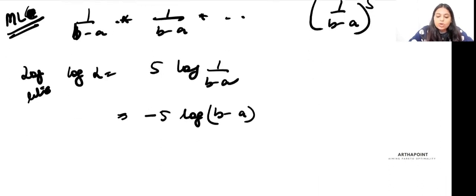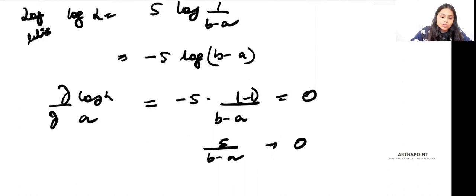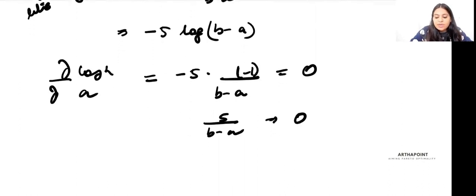Then what you do is differentiate the log function with respect to A. There are two parameters, A and B. When you differentiate with respect to A, you get (1/(B-A))(-1) = 0, which gives 5/(B-A).